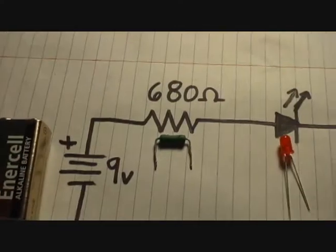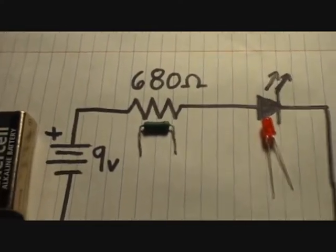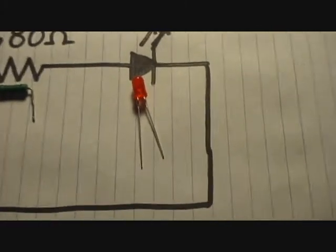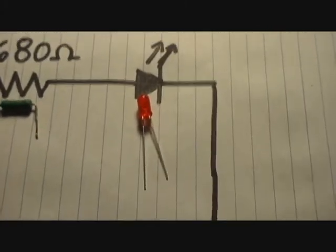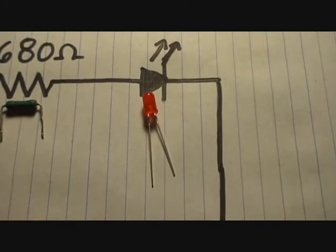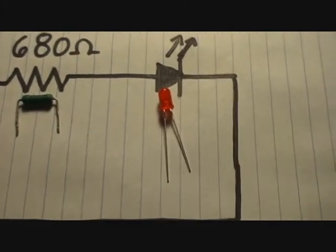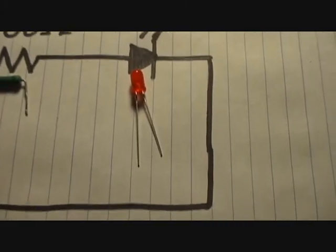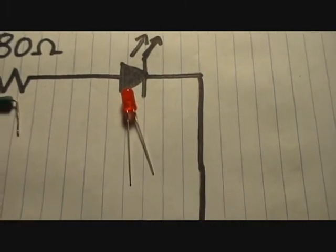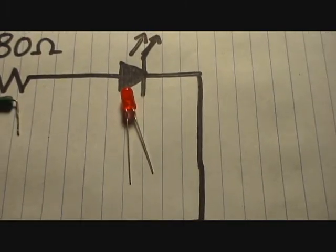The resistor also acts as a current limit. So LEDs are rated in current, usually milliamps. I think this one's around 50 milliamps or so. Now, as long as you don't go over that rating, your LED will work fine. Otherwise, it'll just pop and it won't work. It'll just basically burn it up.